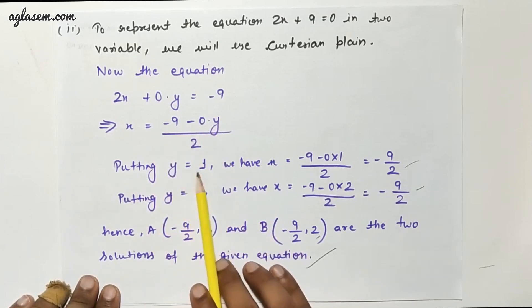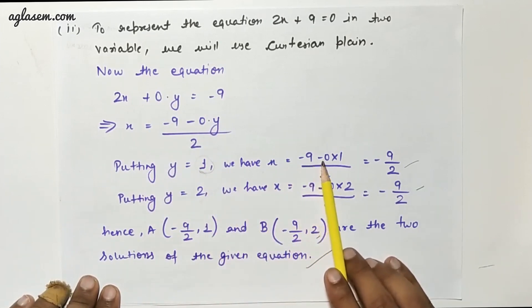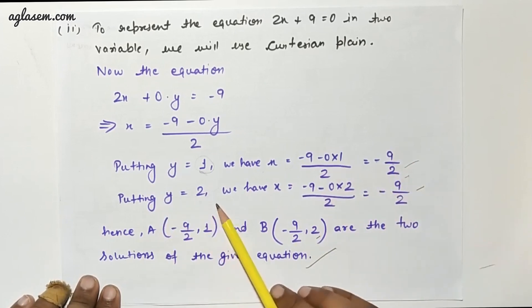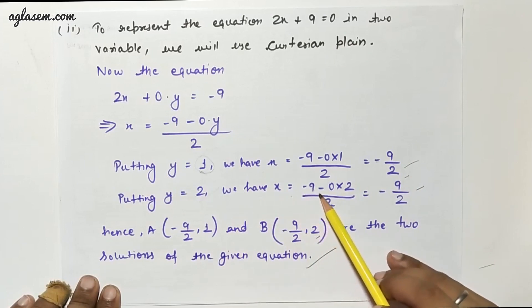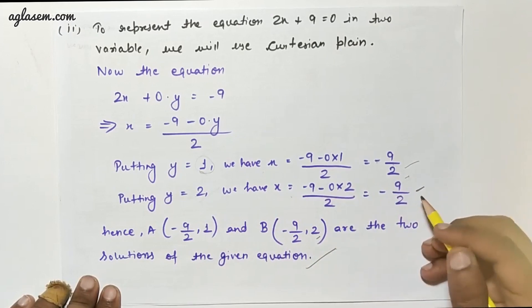Putting y equals 1, we have x equals minus 9 minus 0 times 1 upon 2, which equals minus 9 upon 2. Putting y equals 2, we have x equals minus 9 minus 0 times 2 upon 2, same as in Question 1.